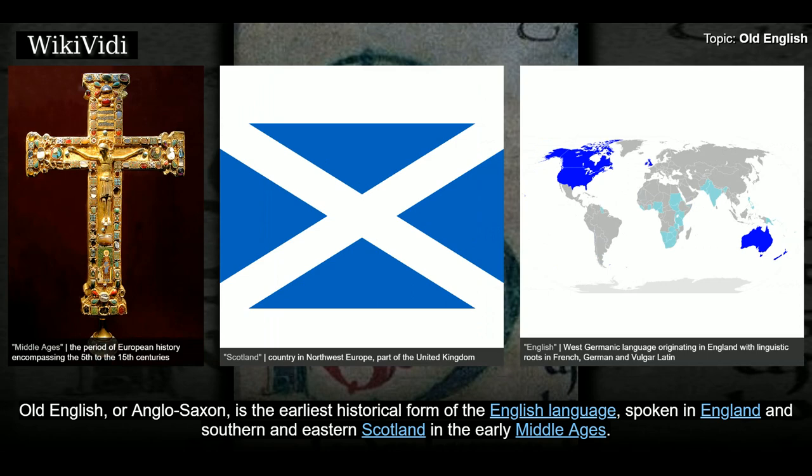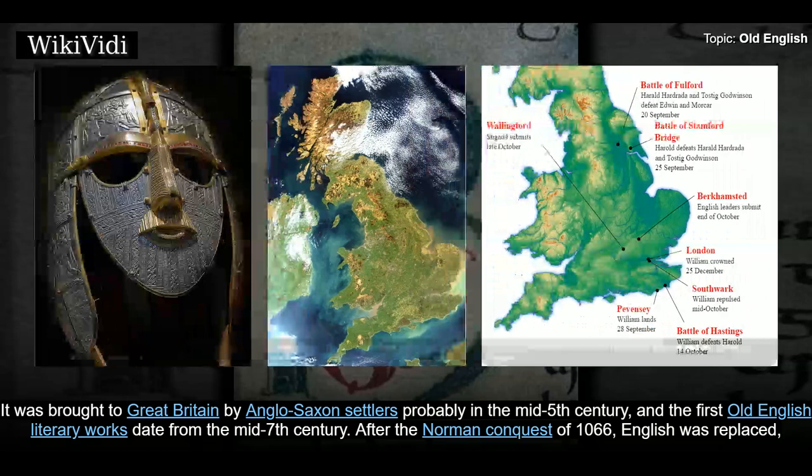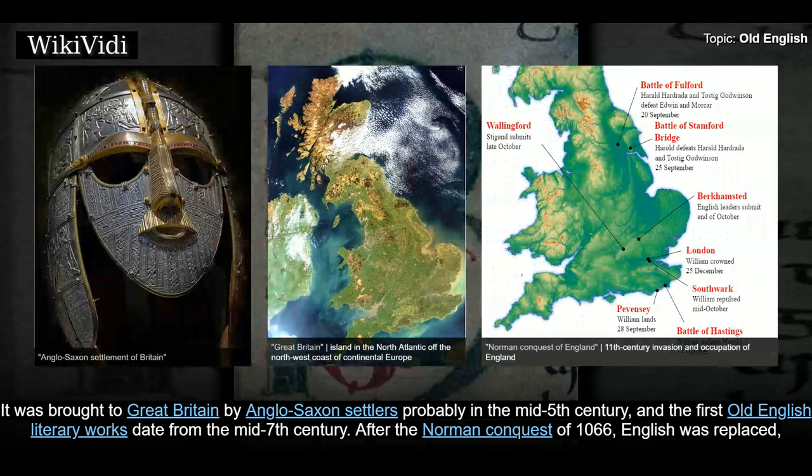Old English, or Anglo-Saxon, is the earliest historical form of the English language. Spoken in England and southern and eastern Scotland in the early Middle Ages, it was brought to Great Britain by Anglo-Saxon settlers probably in the mid-5th century, and the first Old English literary works date from the mid-7th century.